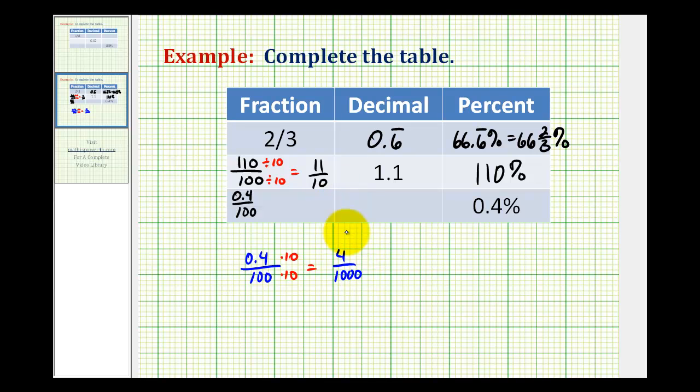But now this can be simplified. They both have a common factor of 4. 4 divided by 4 is equal to 1, and 1000 divided by 4 is equal to 250. So the simplified fraction form would be 1 over 250.